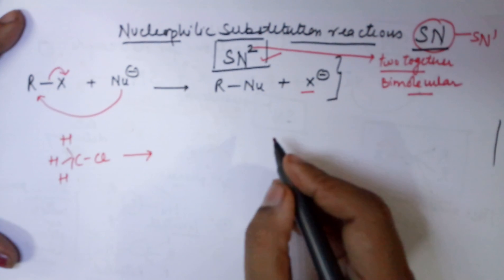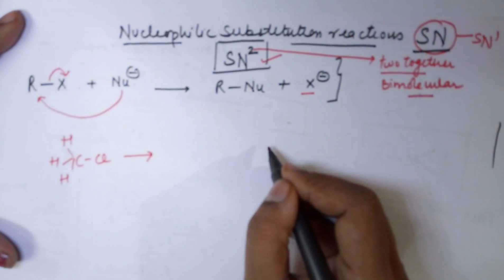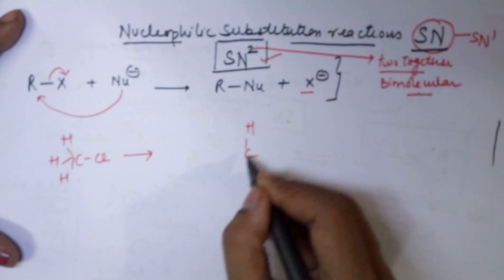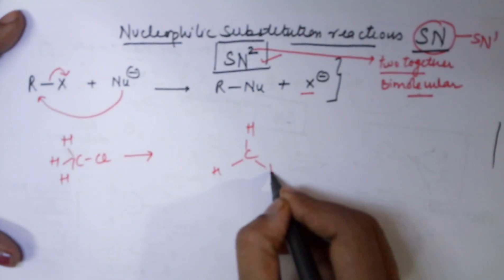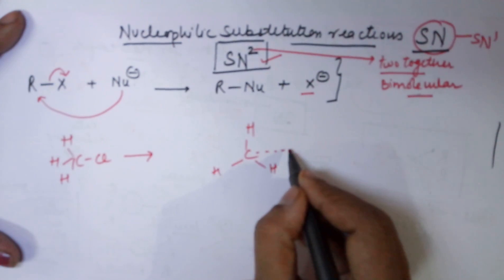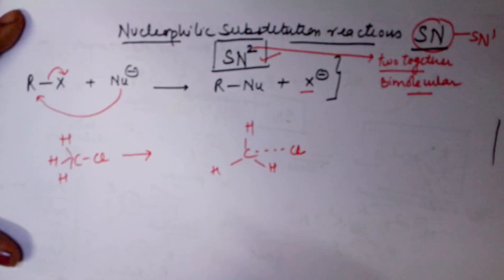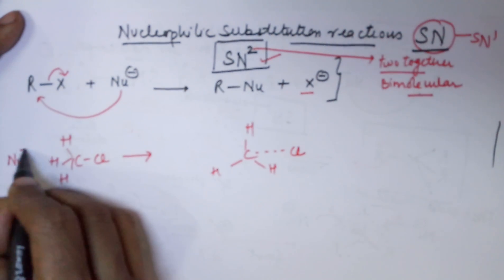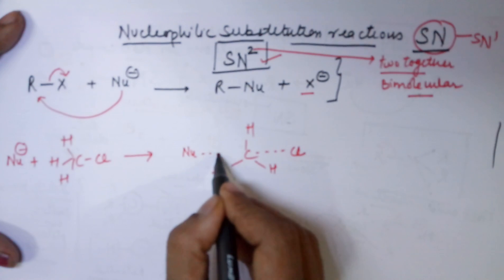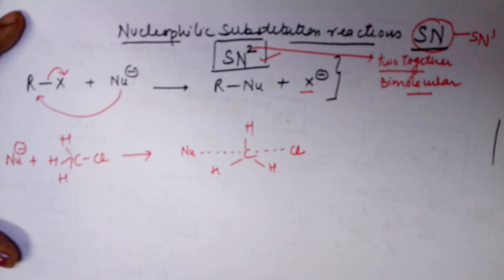Now, actually what happens is, your mechanism involves one step. This is your methyl halide or the chloride. The chloride starts to leave and the nucleophile needs to attack. And this nucleophile attacks from the opposite end. Why do you think this would happen?